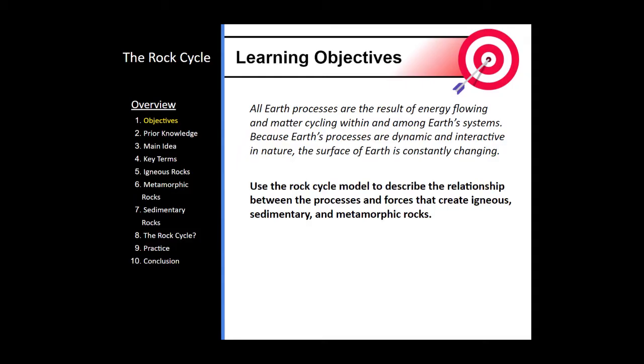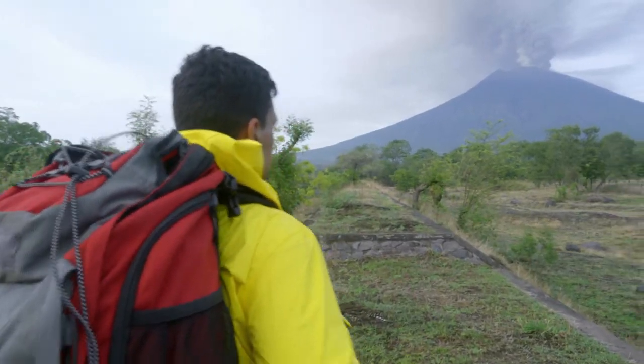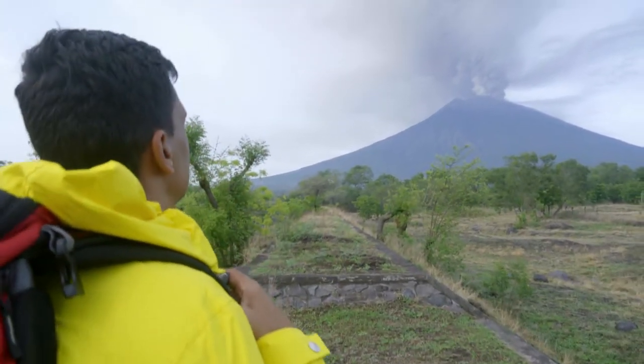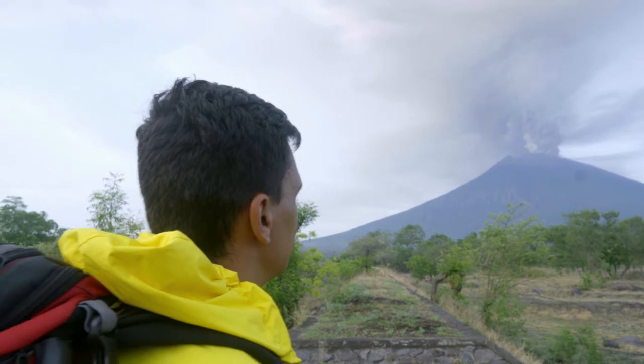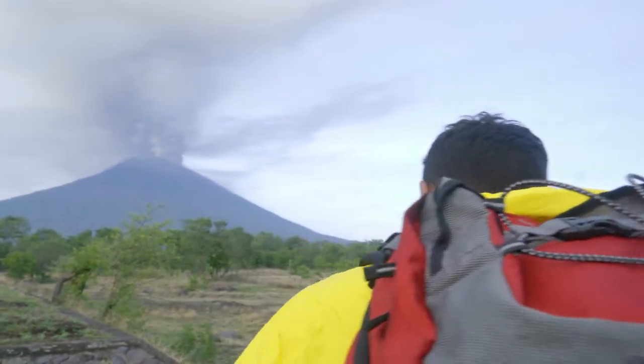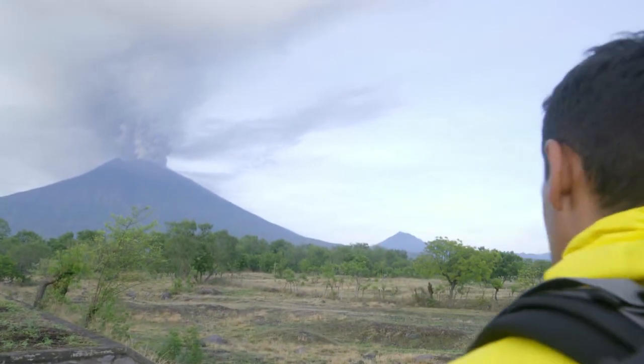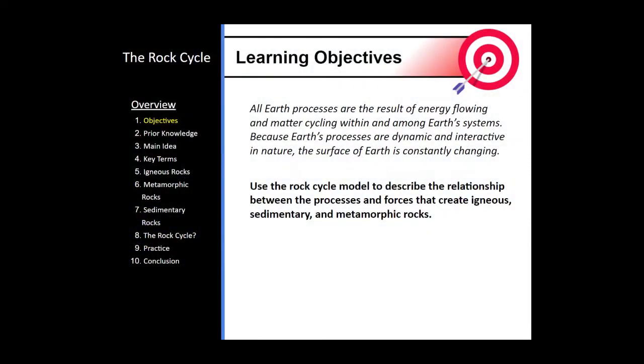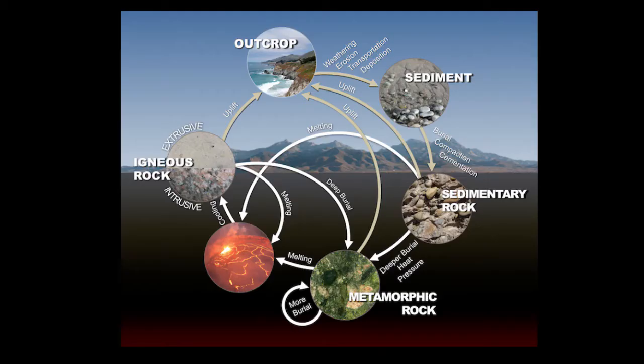So our learning objectives for this module is that Earth is constantly changing. Matter, including rocks, is constantly cycling within the Earth. And because the Earth is dynamic and always changing, the surface of the Earth is also always changing. During this module, we're going to focus particularly on the rock cycle because it's a great example of how Earth is constantly changing.